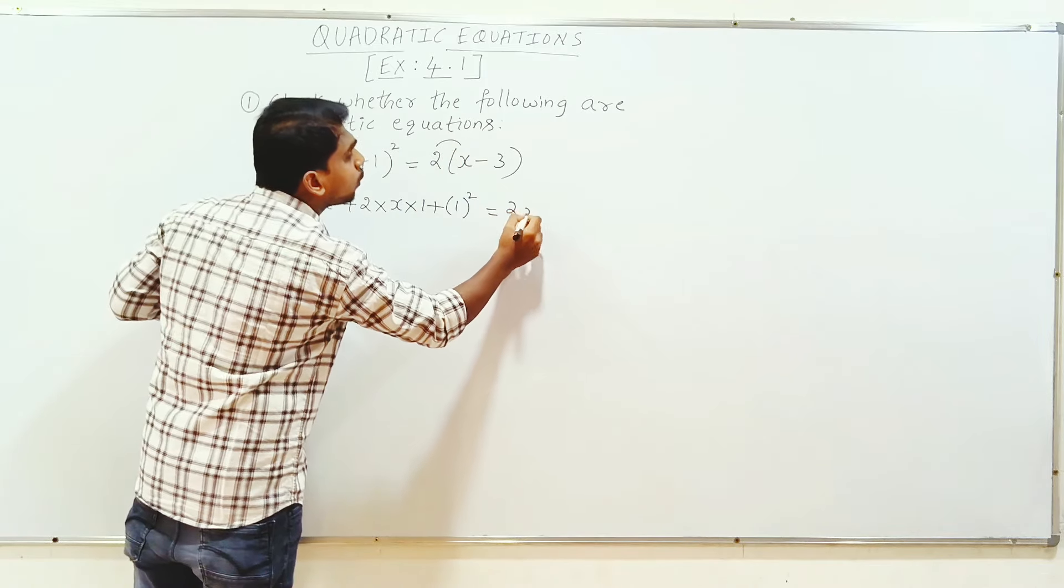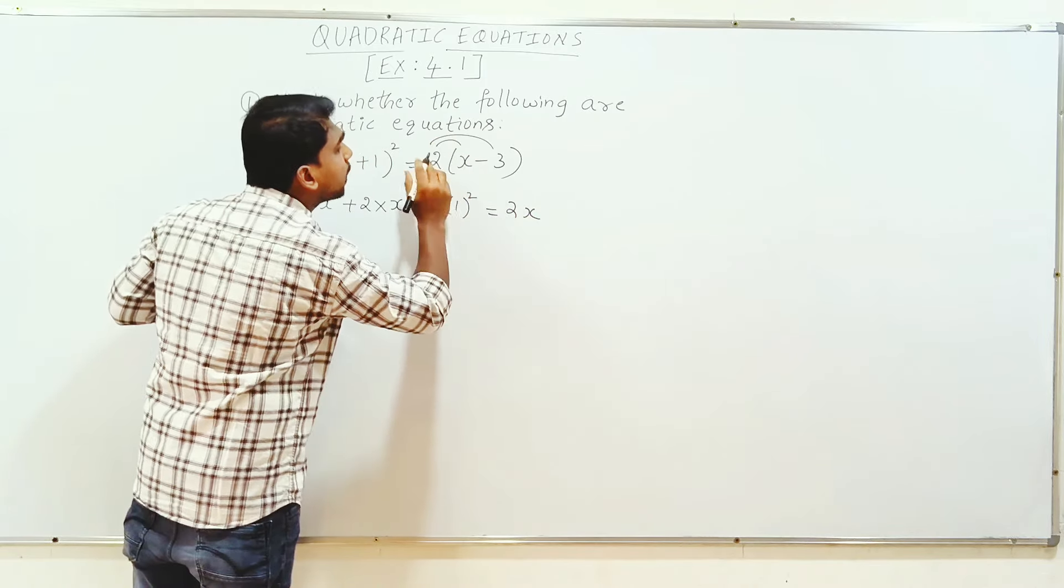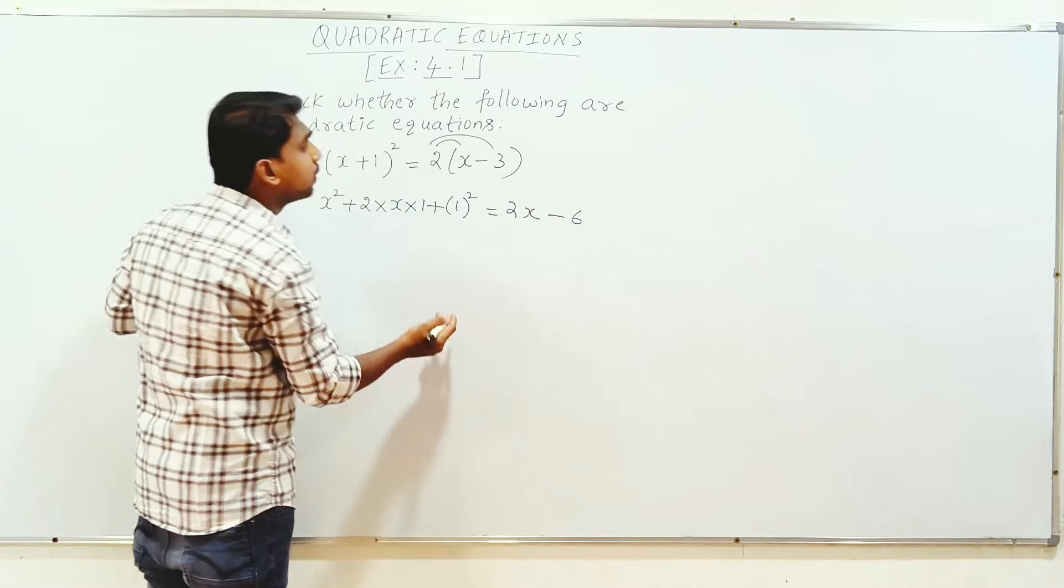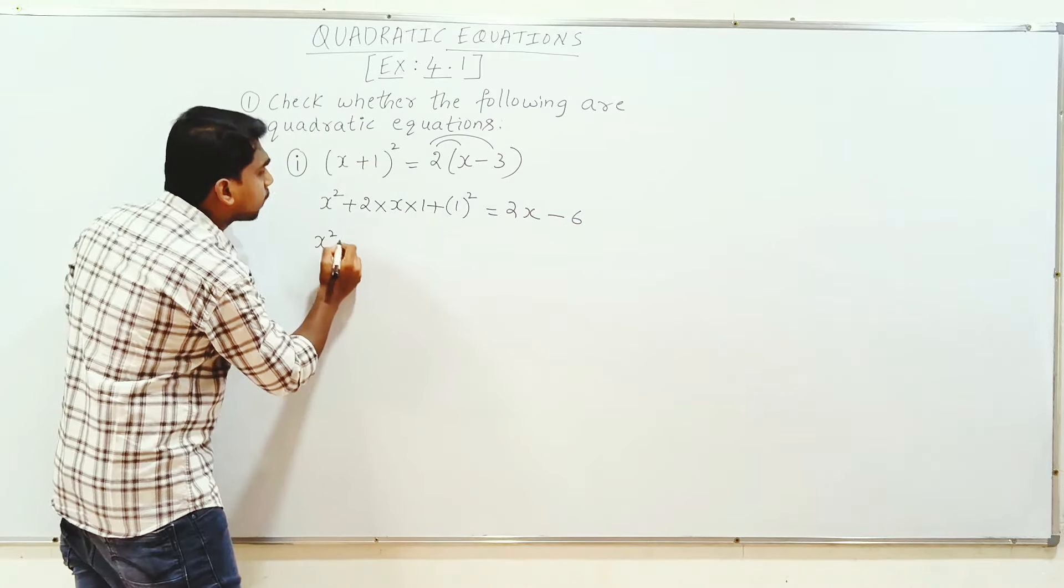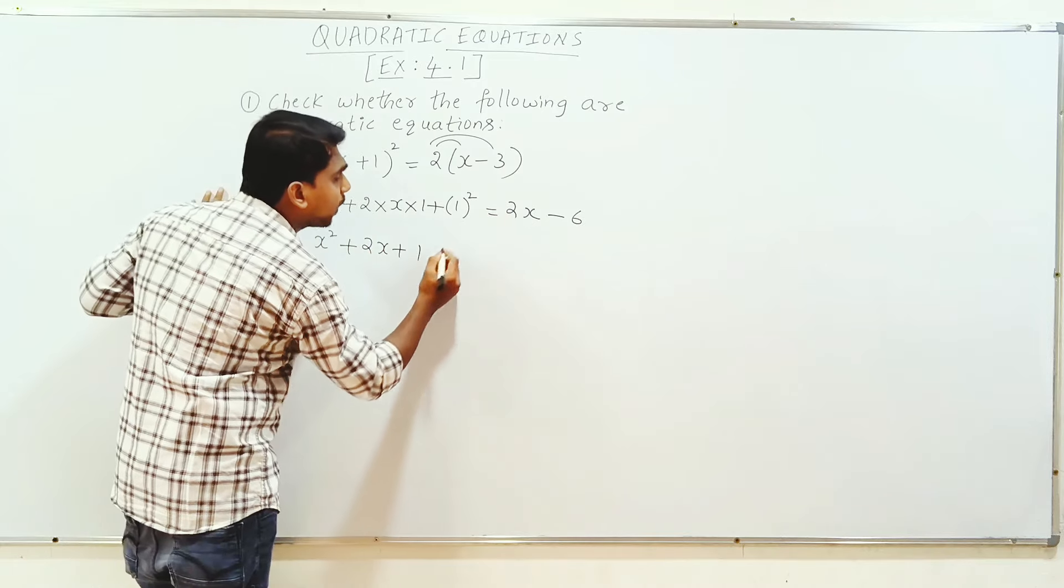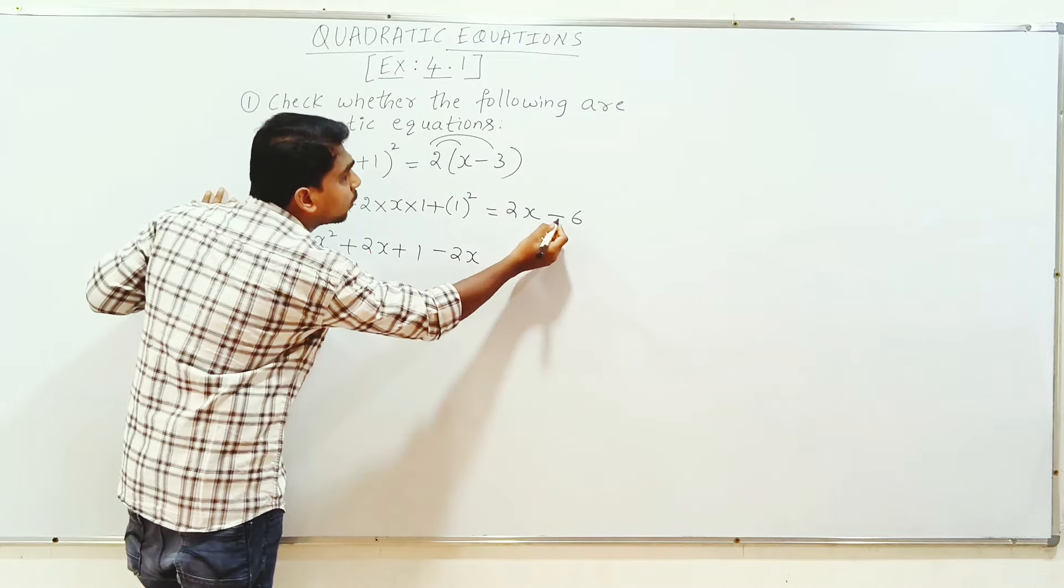2 into x, 2x. Plus 3 to minus, minus 2, 3 is 6. This is x square plus 2x plus 1. Plus 2x here, minus 2x, minus 6 here, plus 6 equal to 0.